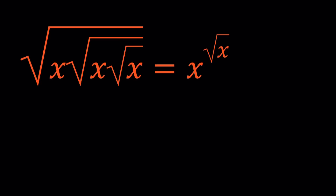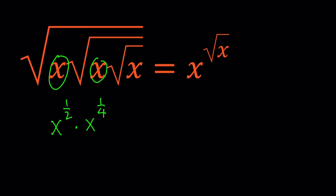Let's go ahead and simplify the left-hand side. We can actually do it in a couple of different ways. First of all, I can think about this x as under one radical, so that's x to the power one-half. This x is under two radicals — the square root of the square root of x — so we can write that as x to the power one-fourth. And this x is under three radicals, so we can write it as x to the power one-half to the power one-half to the power one-half, which gives us x to the power one over eight.